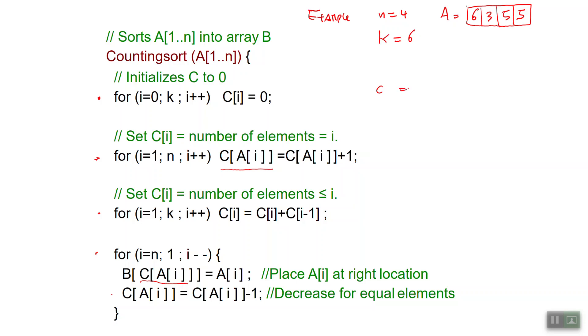So C starts with an all 0 array of length 6. Then in the second for loop I'm going to set C[i] to be the number of elements equal to i.